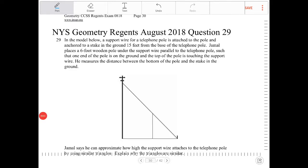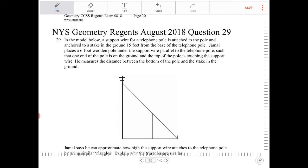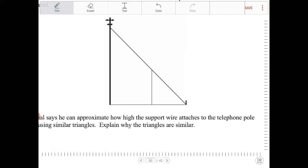In the model below, a support wire for a telephone pole is attached to the pole and anchored to a stake in the ground 15 feet from the base of the telephone pole. Let's just measure this out. This is 15.